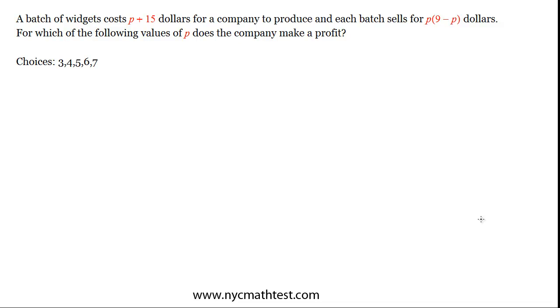Hi, this is Dan Malloy with video number 2 of the Advanced GMAT Quant Series. We have a batch of widgets which costs P plus $15 for a company to produce, and each batch sells for P times 9 minus P dollars. For which of the following values of P does the company make a profit? And we have multiple choice.